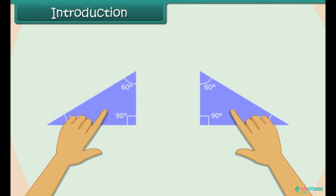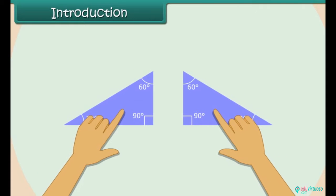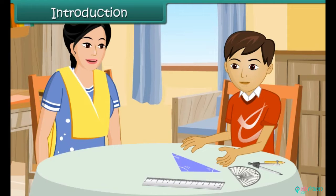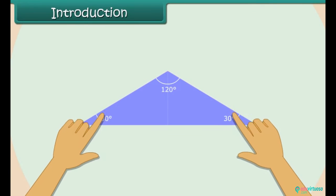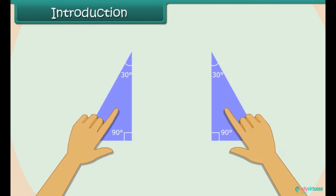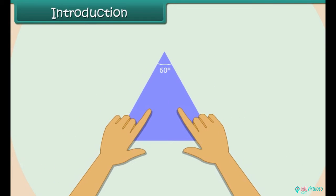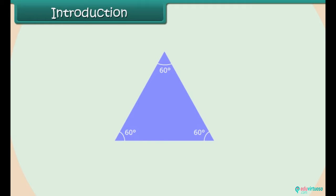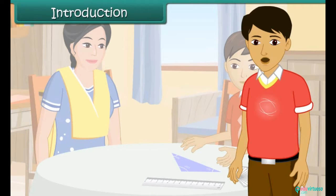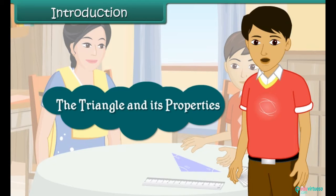Mom, look. I made a new triangle by joining two identical right-angled triangles. That's great, Nick. Did you observe the sides and angles of the new triangle? Yes, Mom. Two sides and two angles are equal. Wonderful. Now join two right-angled triangles to create a new triangle with all sides and all angles equal. I have done that as well, Mom. In this lesson, you will learn about the triangle and its properties.